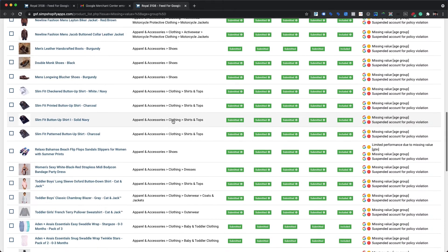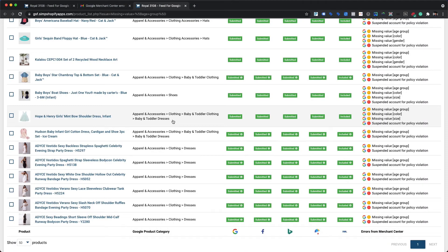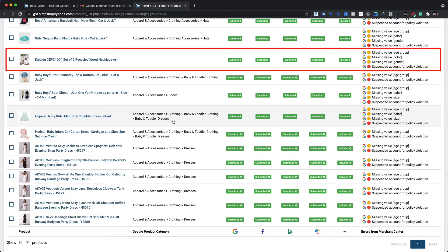In this use case, all our products are showing the same warning. Important note: before proceeding to assign an age group value to resolve the missing value age group warning from Google Merchant Center, please ensure that you have assigned the correct Google Product Category to all your products. If the Google Product Category is not assigned manually, Google automatically assigns one — and there are times when that automatically assigned category is inaccurate. The required attributes for an inaccurate product category may differ from the actual product requirements.